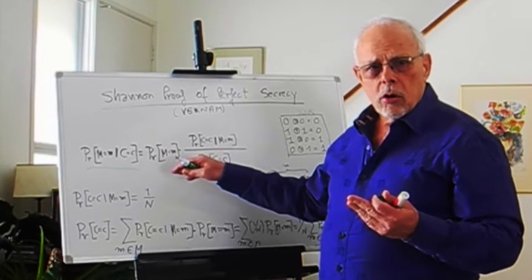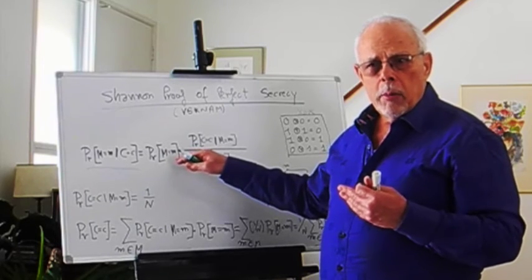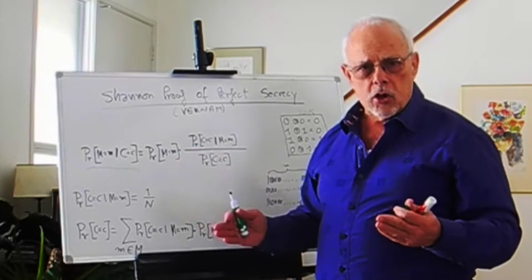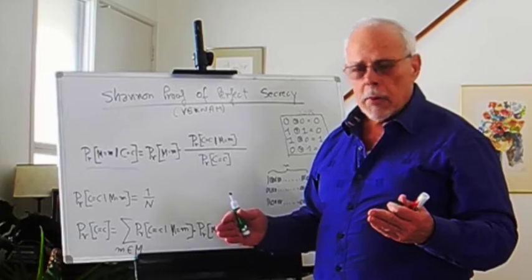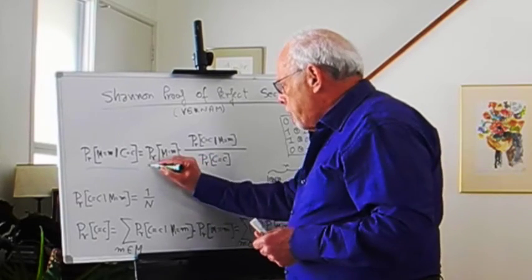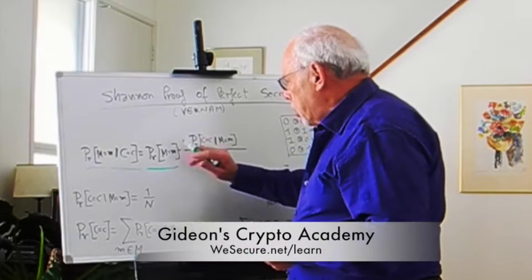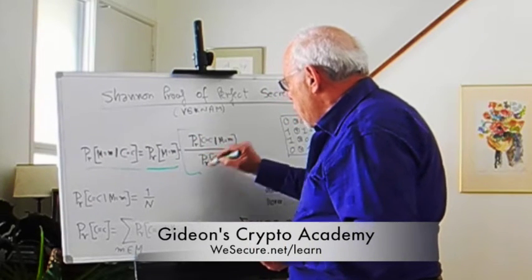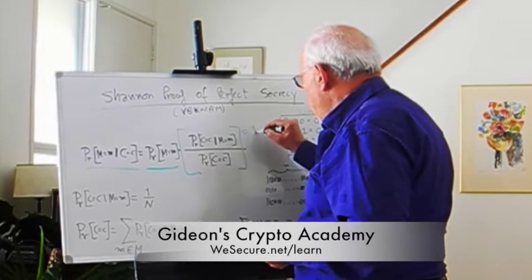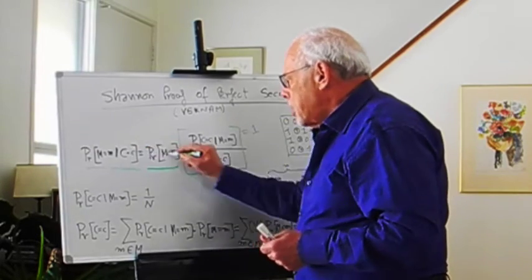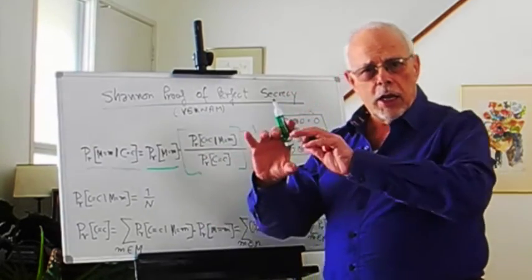This expression says: this is the probability for the message to be m without any conditions. If this and this are equal—in other words, if this expression equals one—and these two equate, then we have perfect secrecy.